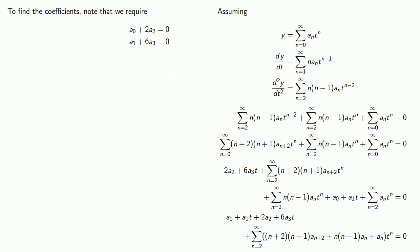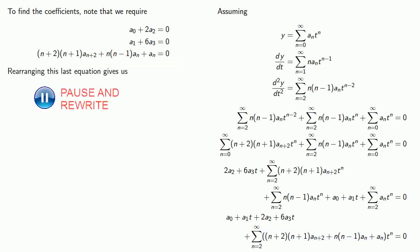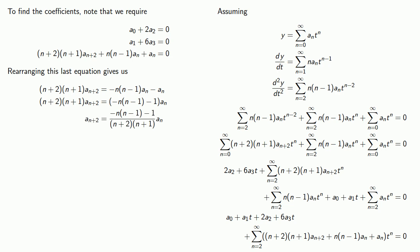And in fact, all of the other coefficients must also be equal to 0. And if we rearrange this last equation we get a formula which tells us how to find later coefficients in terms of earlier coefficients.